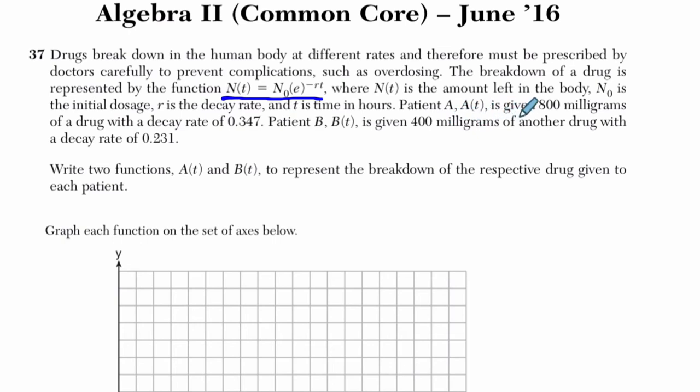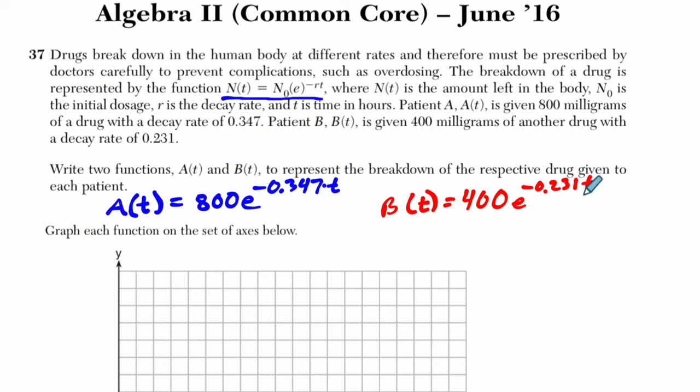Patient A, A of T, is given 800 milligrams of a drug. So that's the n sub zero. That's the beginning part. So they want us to write that function out. So I'm going to say A of T starts at 800. And then we multiply E by what they tell us has a decay rate of 0.347. So negative 0.347 times time. And that's our patient A. And then patient B, they want to say it's B of T. That makes sense. It starts off now with 400 milligrams. A different decay rate of 0.231. You get a negative 0.231 T.